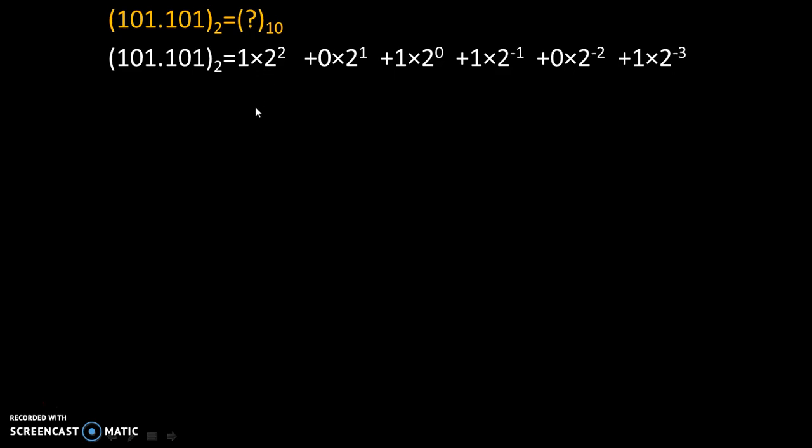After that, simple mathematics. So 2² is 4. 4 multiplied by 1 will give us 4. 0 multiplied by anything gives 0. 2⁰ is 1, and 1 multiplied by 1 gives 1. Now 2⁻¹ is nothing but 1 divided by 2, which is 0.5. And 0.5 multiplied by 1 gives 0.5.